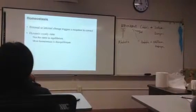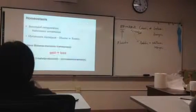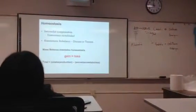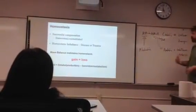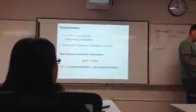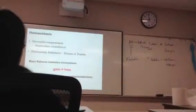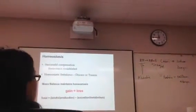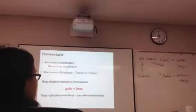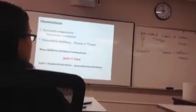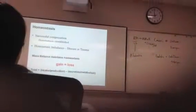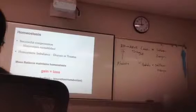Just to beat this into the ground here: we trigger a response to correct. If compensation is successful, homeostasis is reestablished. If you ever have a homeostatic imbalance, or you can't restore optimal condition, that is usually due to disease — an external force working on the body due to a pathogen — or trauma, meaning we have damaged the tissue somehow. Disease or trauma will often lead to a homeostatic imbalance.